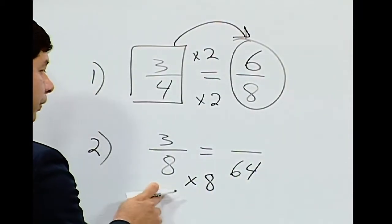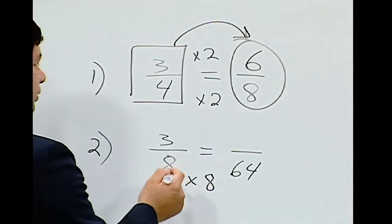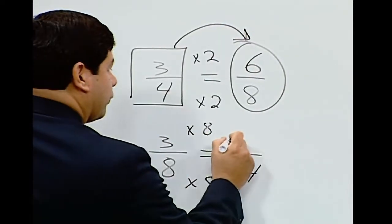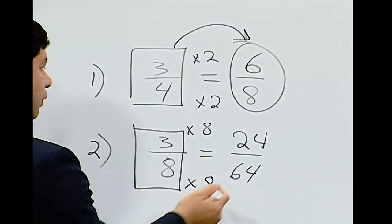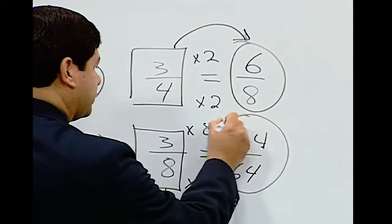So what we do to the numerator, let's also do to the denominator. Or in this case, what we do to our denominator, let's also do to our numerator. 3 times 8 equals 24. So in raising 3/8 to some number over 64, we know it is 24/64.